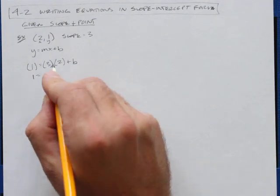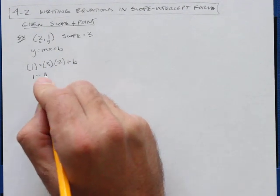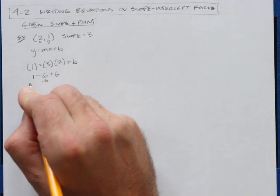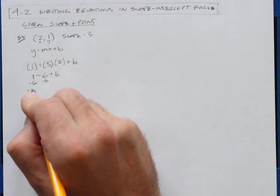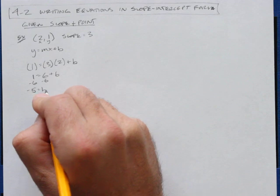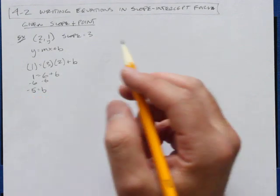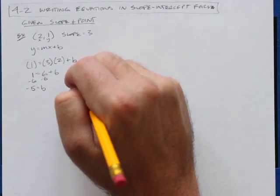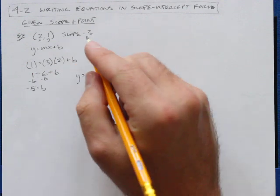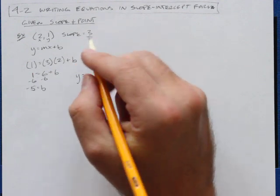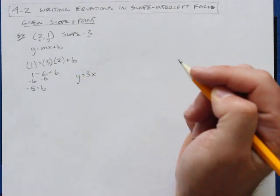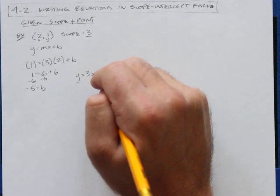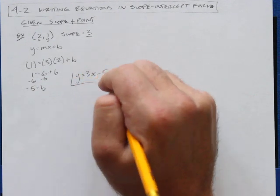So 1 equals 3 times 2, which is 6, plus b. Subtract 6 from each side and I get negative 5 equals b. So now all I have to do is rewrite the equation: y equals 3x minus 5. Done.